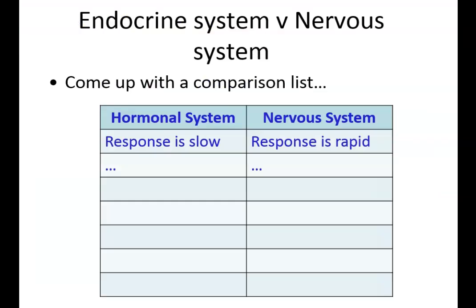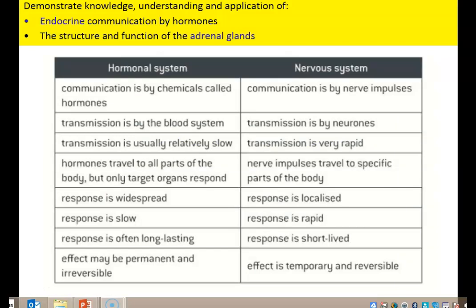Another good thing to look at now is to compare how the endocrine system and the nervous system work. In an A-level question, if they ask for a comparison, you have to write both sides of the argument. You can't just say the hormonal system response is slow — you'd have to say in the hormonal system the response is slow, but it is rapid in the nervous system. You always have to give both sides in a comparison. For an A-level exam, I would realistically want about four or five of these differences in an answer.